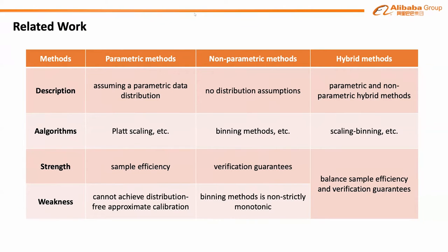Kumar et al. proposed a new method combining Platt scaling and histogram binning to balance data efficiency and distribution-free theoretical guarantees. Although widely used binning methods don't have distribution assumptions, we find the binning scheme of previous methods is too simple, limiting calibration performance. In our work, we also consider the hybrid of binning and scaling and further explore how to find a better scheme.